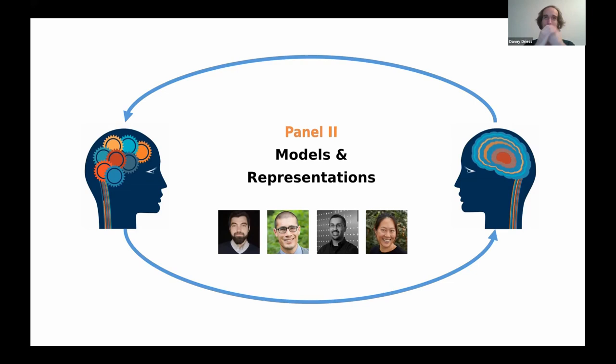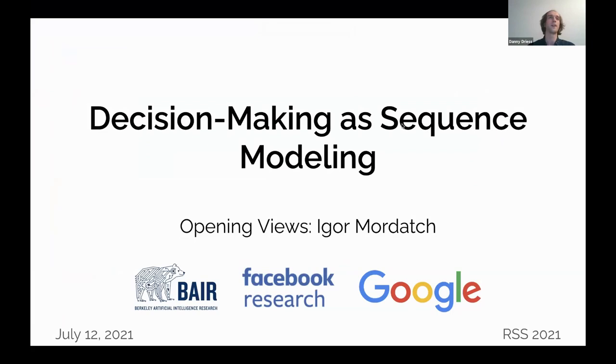So it's a great pleasure to have Igor Mordatch. Igor is a research scientist at Google Brain. Before that, he was at OpenAI after a postdoc at Berkeley. He received his PhD from the University of Washington under supervision of Emo Todorov. Igor's research covered a large range of topics from model-based trajectory optimization to contact invariant optimization, and nowadays shifted more towards model-based reinforcement learning. We're really looking forward to hear your insights.